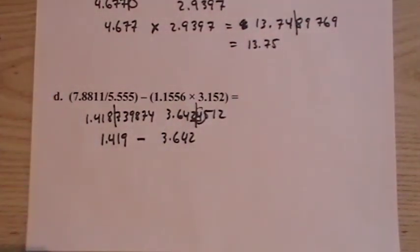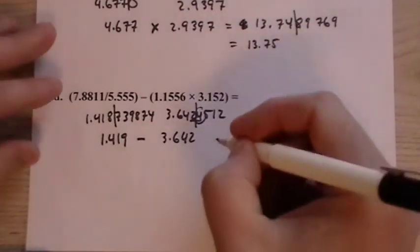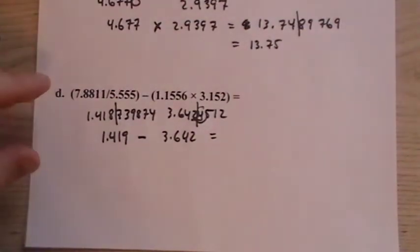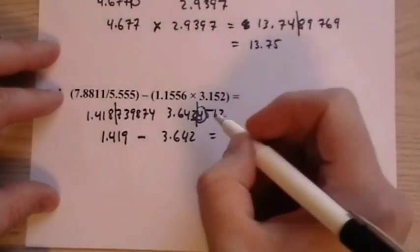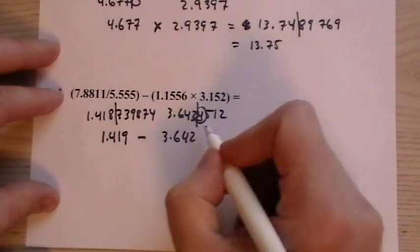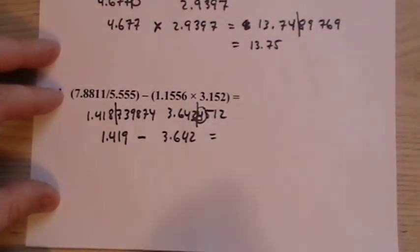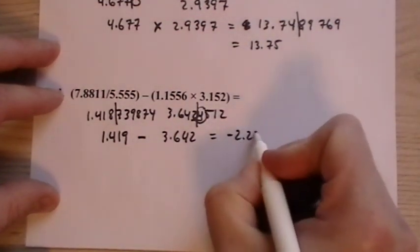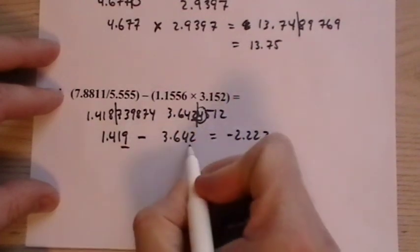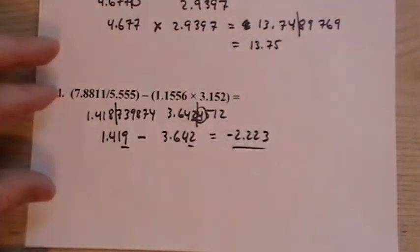And you'll see in some books a little more involved rounding rules. Do whatever it says. But in this case, for this class, this is what we use. Okay. And then we have minus 2.223. They're both out to the third decimal place, so that's our answer.